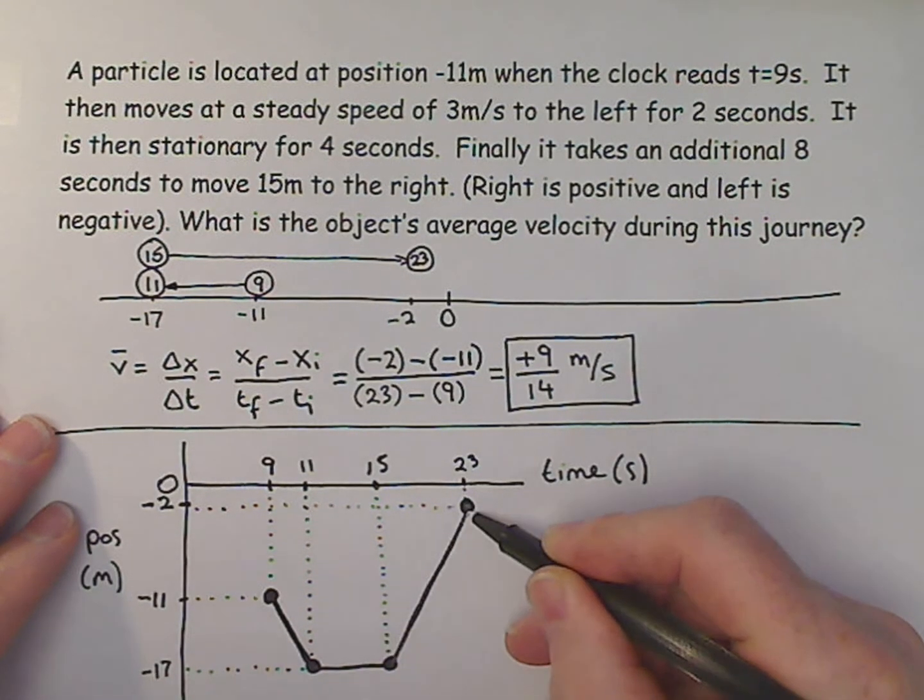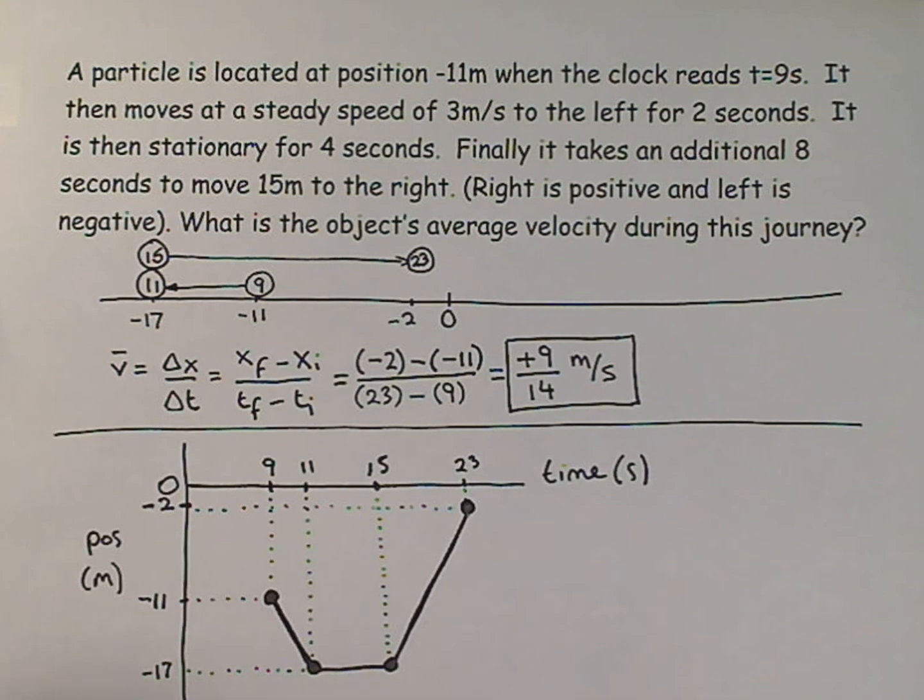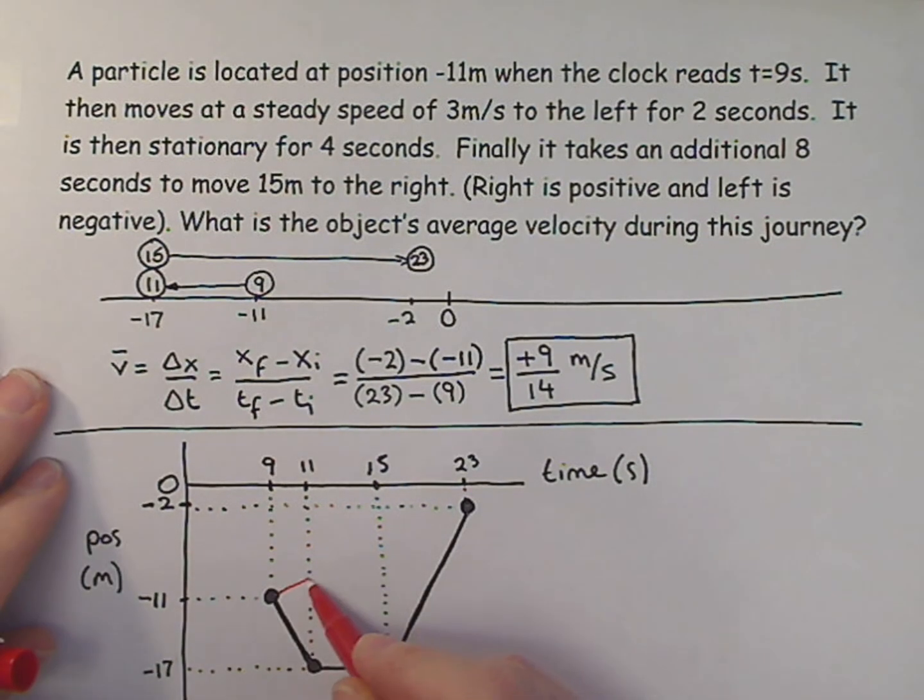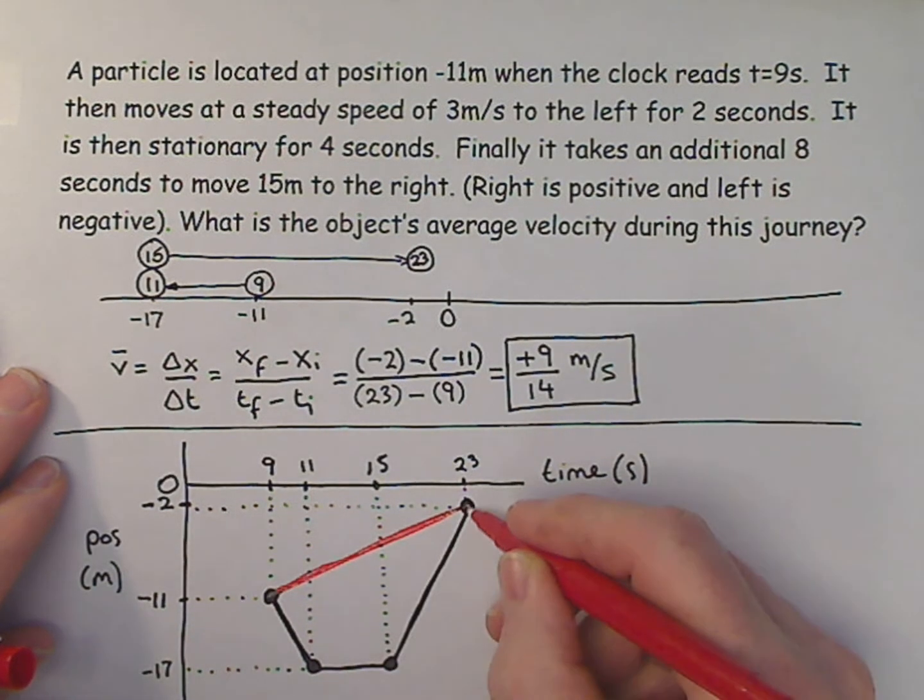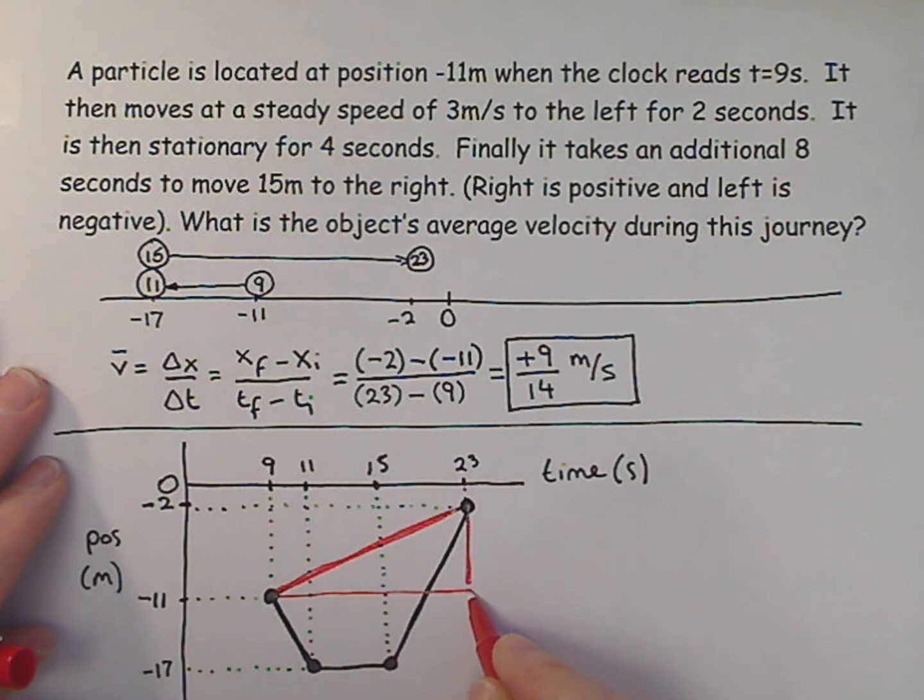So there's my journey shown graphically. And the average velocity is the displacement divided by the time. Rise over run, of course. So here's my rise. And here's my run.